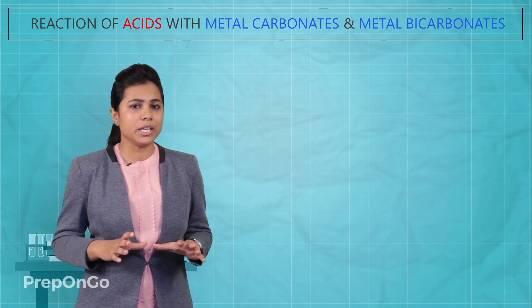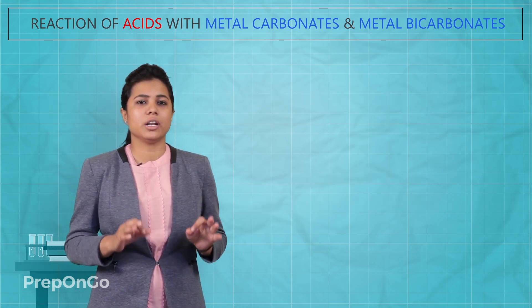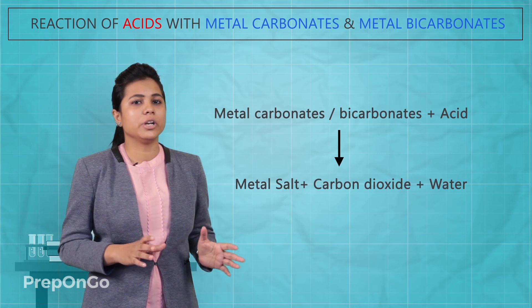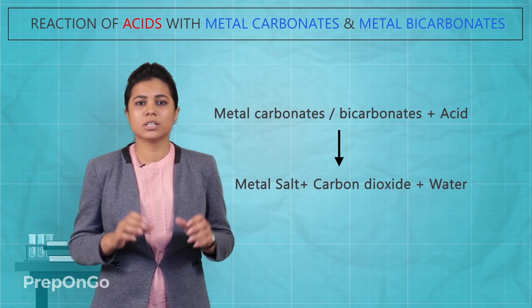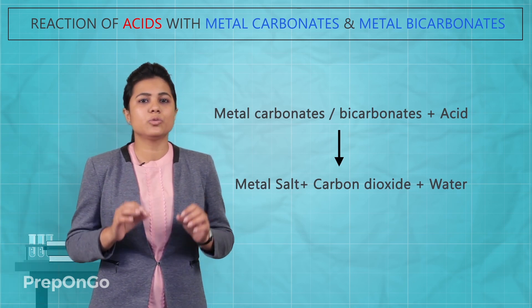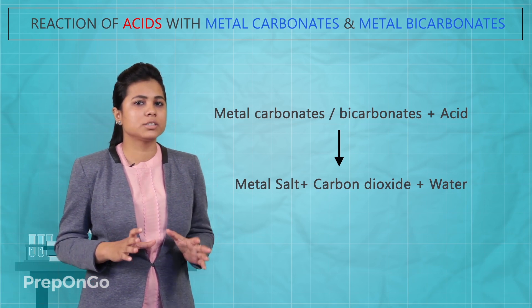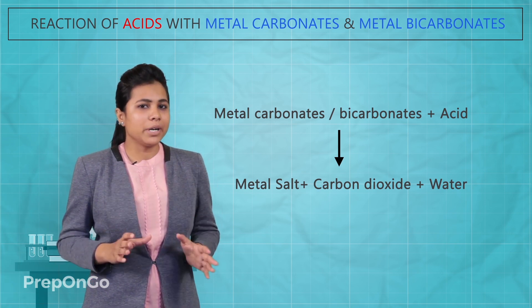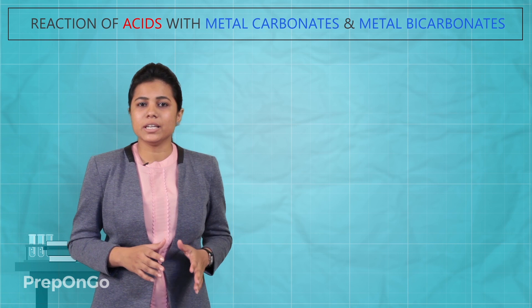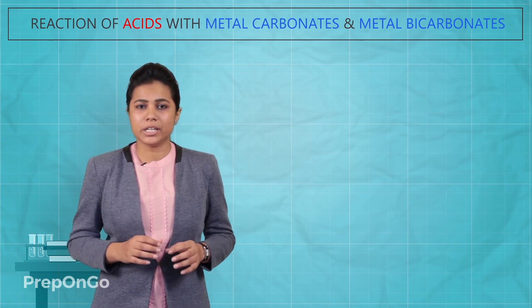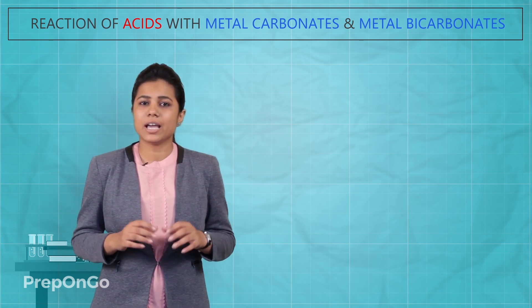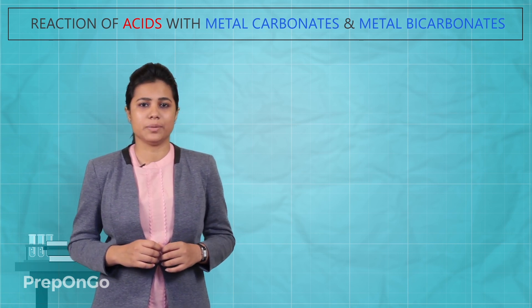In general, we have seen that metal carbonates or metal hydrogen carbonates react with acids to form metal salts, carbon dioxide, and water. We will be seeing in the next video how acids and metal bases react with each other.